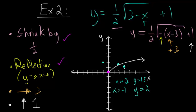Now I can connect these points with a curve. The boundary point is at (3,1), and since we reflected about the y-axis the graph opens to the left and upward. It's been shrunk, so it doesn't grow as quickly as the parent function. This gives a rough idea of what the graph of this equation looks like.